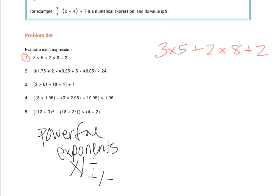Looking at question 1, I see there are no grouping symbols, so I look for exponents — I don't see any. I move to multiplication and division, working left to right. I don't do multiplication first or division first; I do whatever shows up first left to right. I see a multiplication problem: 3 times 5 is 15. I bring down my addition symbol, and then 2 times 8 is 16.